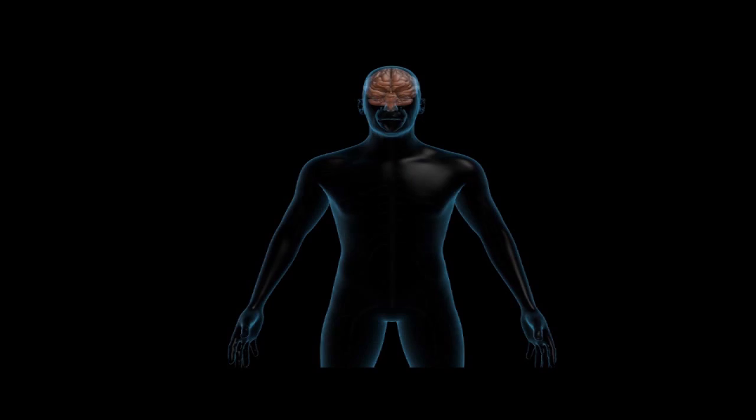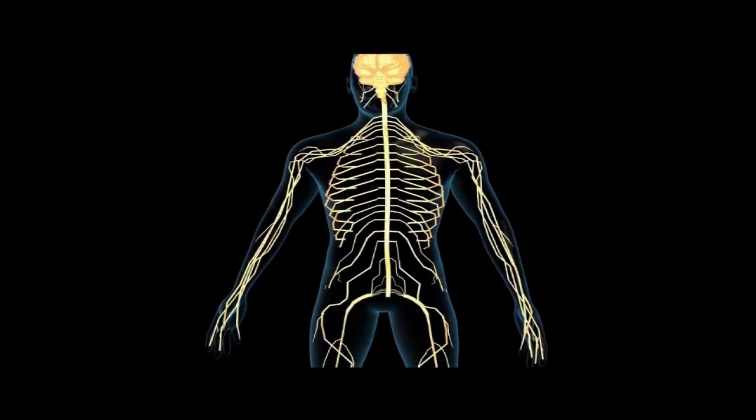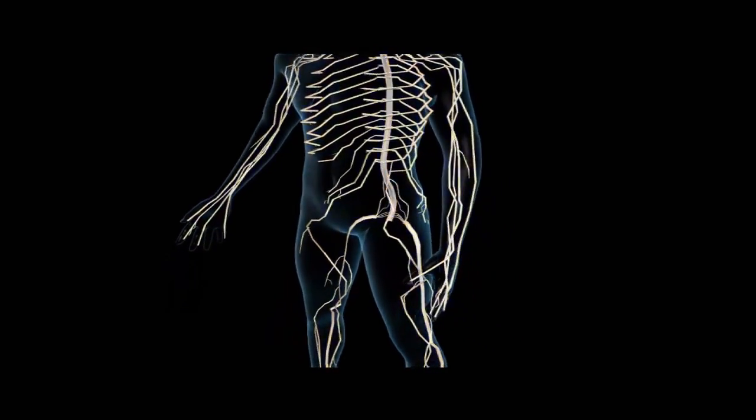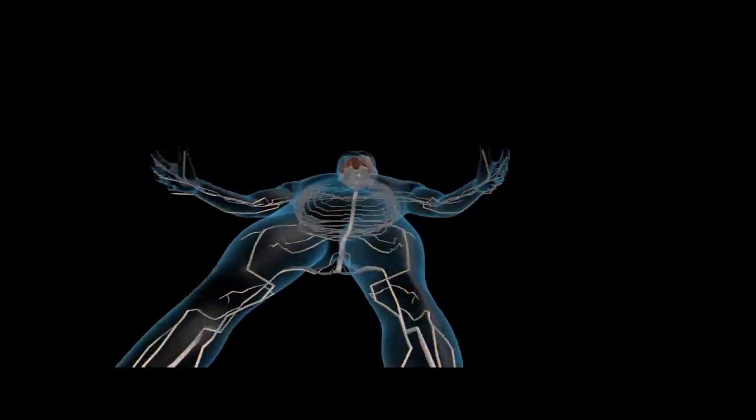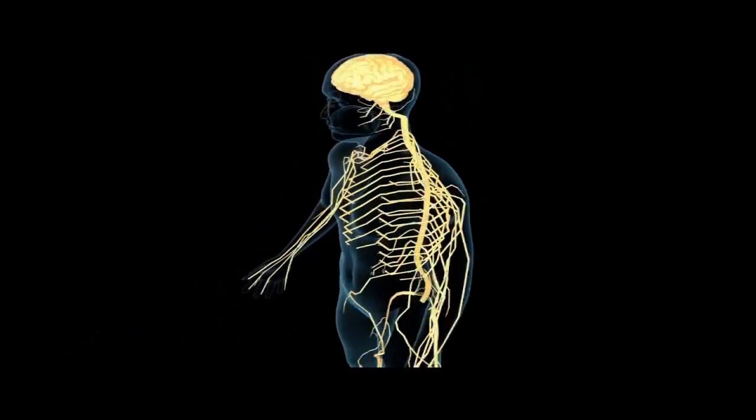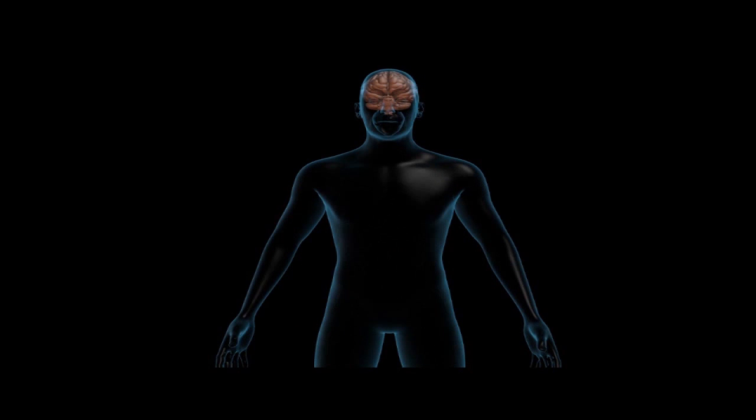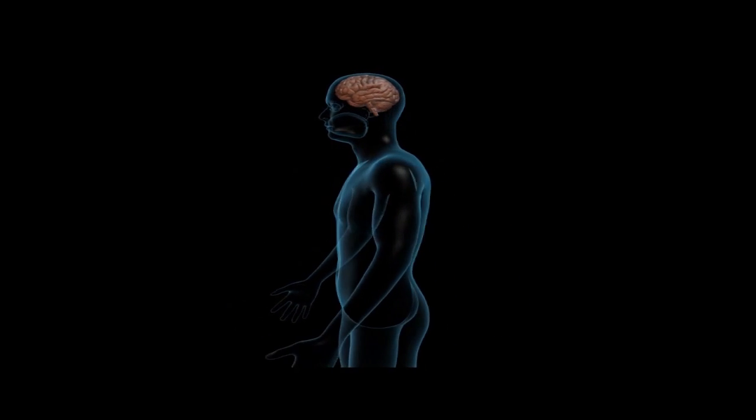Because the central nervous system, which is made up of the brain, the spinal cord, and the billions of nerve cells that extend throughout the body, is responsible for controlling all behaviors and functions, much of the research about the effects of addiction has been focused there.